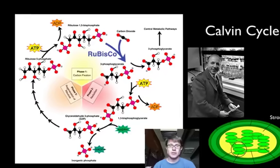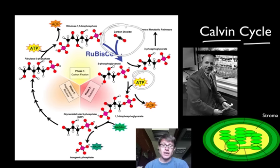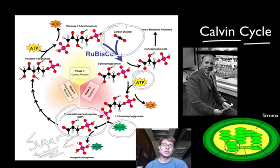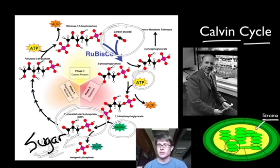Melvin Calvin discovered the Calvin cycle, which shows the next process. You take in carbon dioxide — plants take that in through their stomata — then use the energy of ATP and NADPH to convert it into sugar, specifically a G3P molecule, which can be used to make sugars inside the plant. You don't need to know all the intermediary chemicals. What you do need to know is that we make ATP and NADPH so we can use that energy to make sugars. The Calvin cycle takes place in the stroma, the liquid portion of the chloroplast.